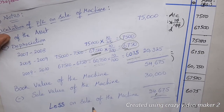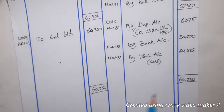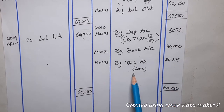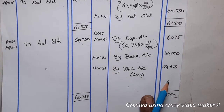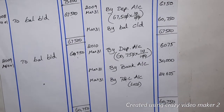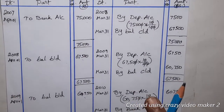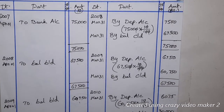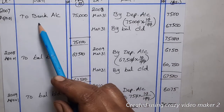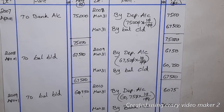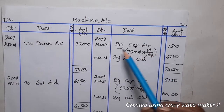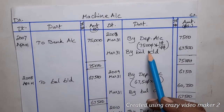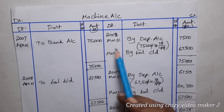The loss on sale is transferred to the Profit and Loss account. On March 31st, the loss is recorded by debiting the P&L account. The entries in both the first method (straight-line) and second method (diminishing balance) are similar — the only difference is in how the depreciation amount is calculated each year.